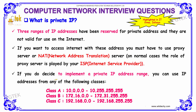So if you want to implement a private address, you have to use a proxy server. If you decide to implement a private IP address range, you can use IP addresses from any of the following three classes.